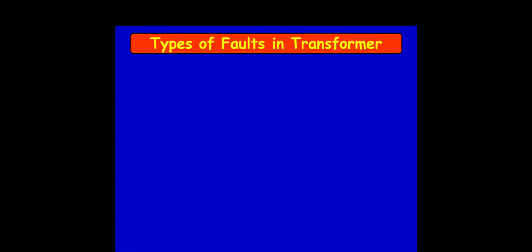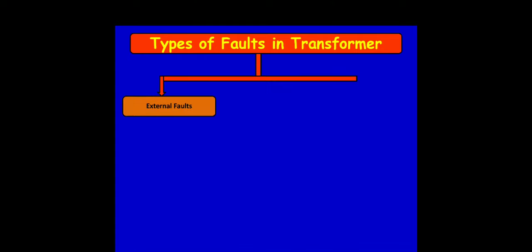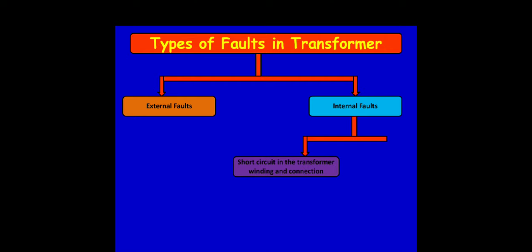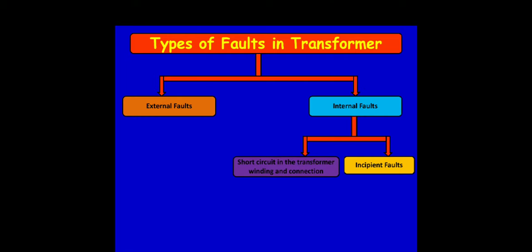Next we have to discuss the different types of faults in power transformers. First there are external faults, and second are internal faults. Internal faults are categorized as short circuits in the transformer windings and incipient faults. External faults are due to circuit breaker faults outside the transformer.